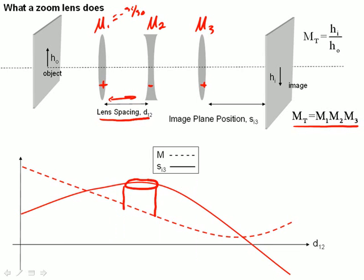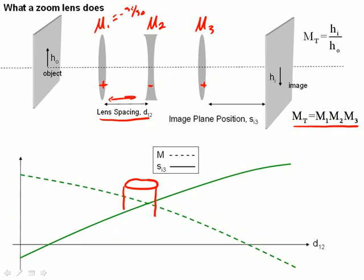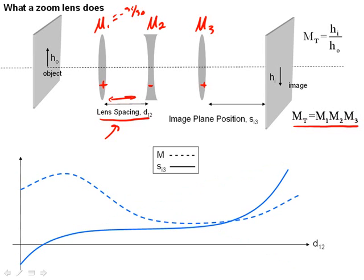Let's look at another set of curves for a three-lens system. Here we have our image position constantly changing and our magnification also changing. This is not a zoom lens because there's no point where, as you change the lens spacing, the image position remains constant. This optical system does not form a zoom lens.